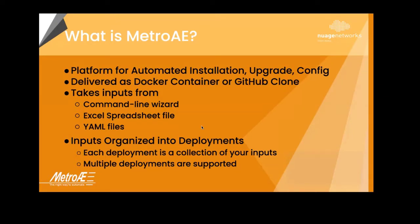There are two ways to consume the platform. One is to consume it as a Docker container. The second is as a GitHub clone. The Docker container takes care of all the prerequisites for you — you just have to have Docker running. With the GitHub clone, we provide a setup script that you run, which configures all the prerequisites on that server, and then you can go ahead and run.